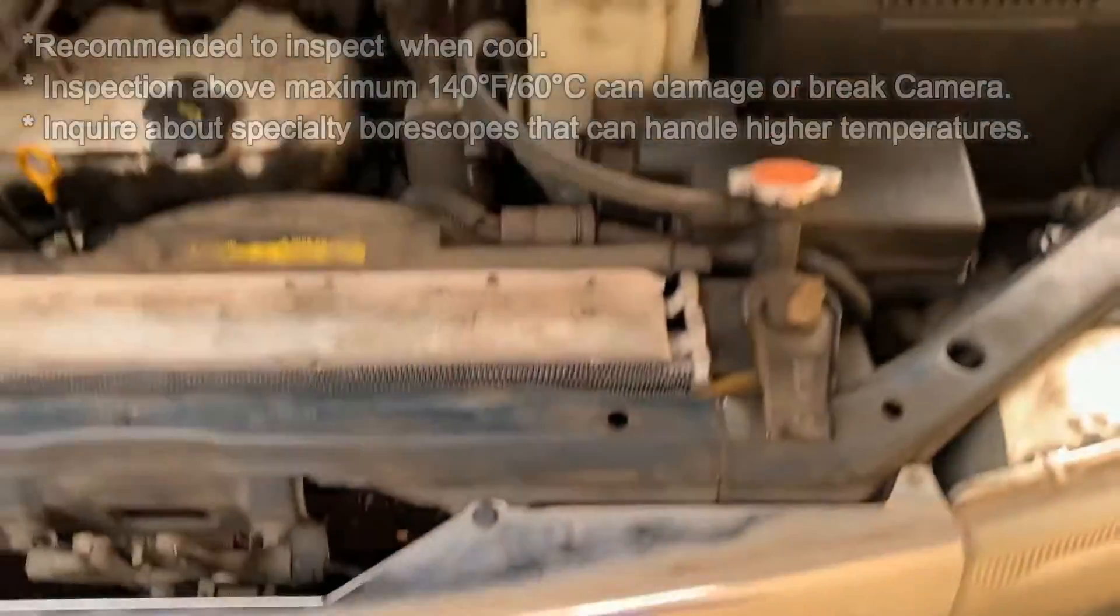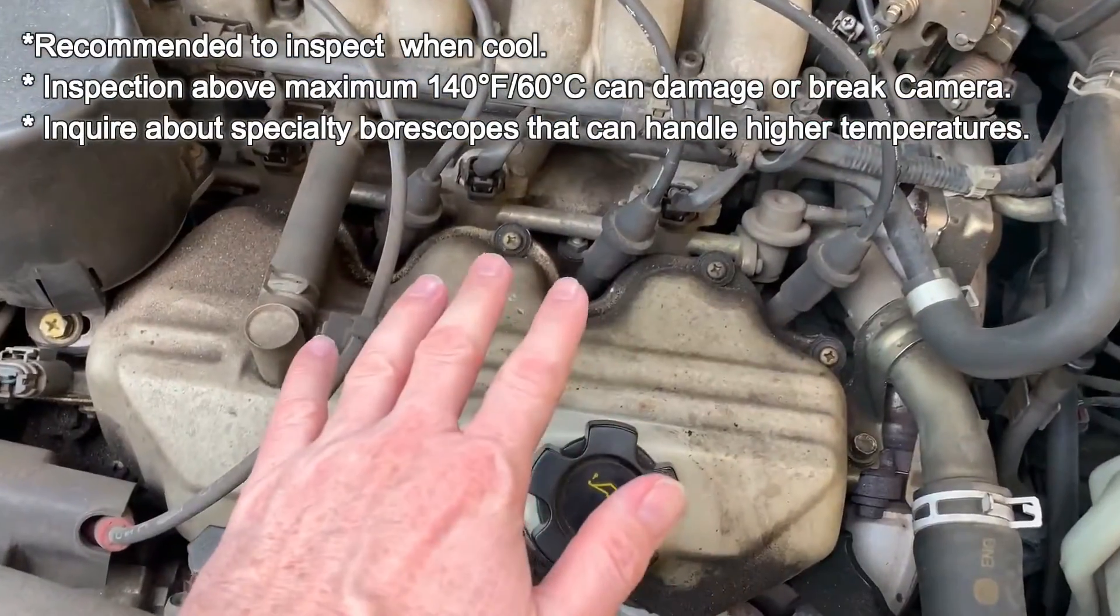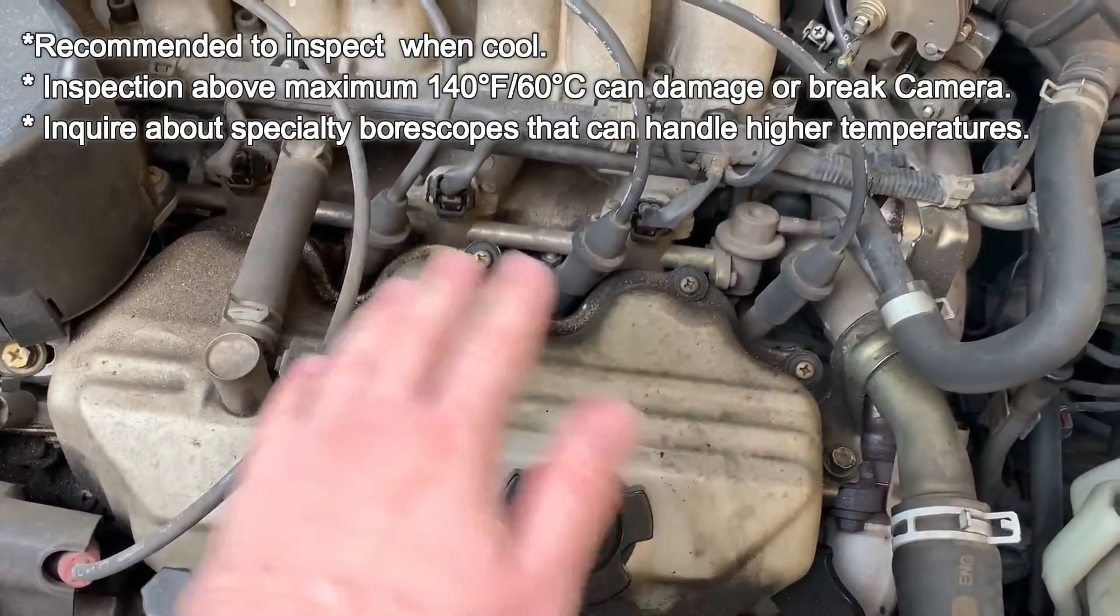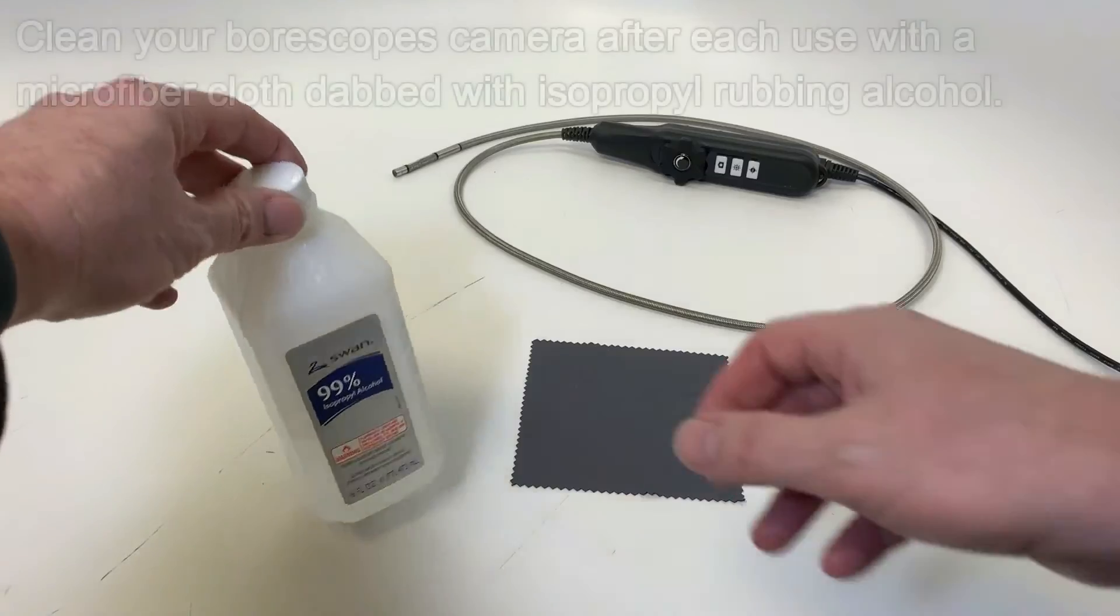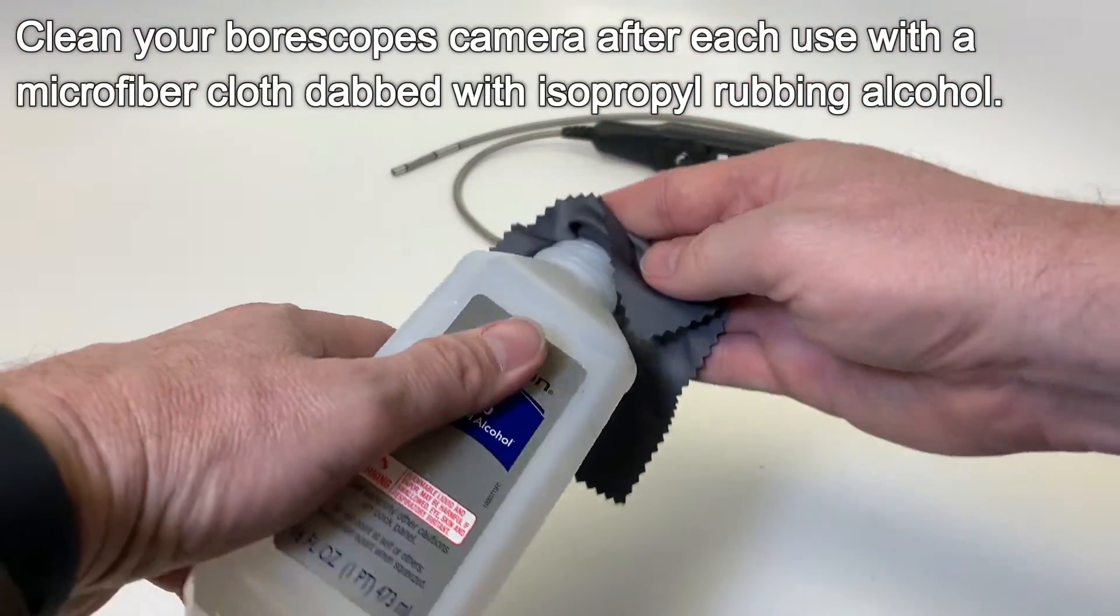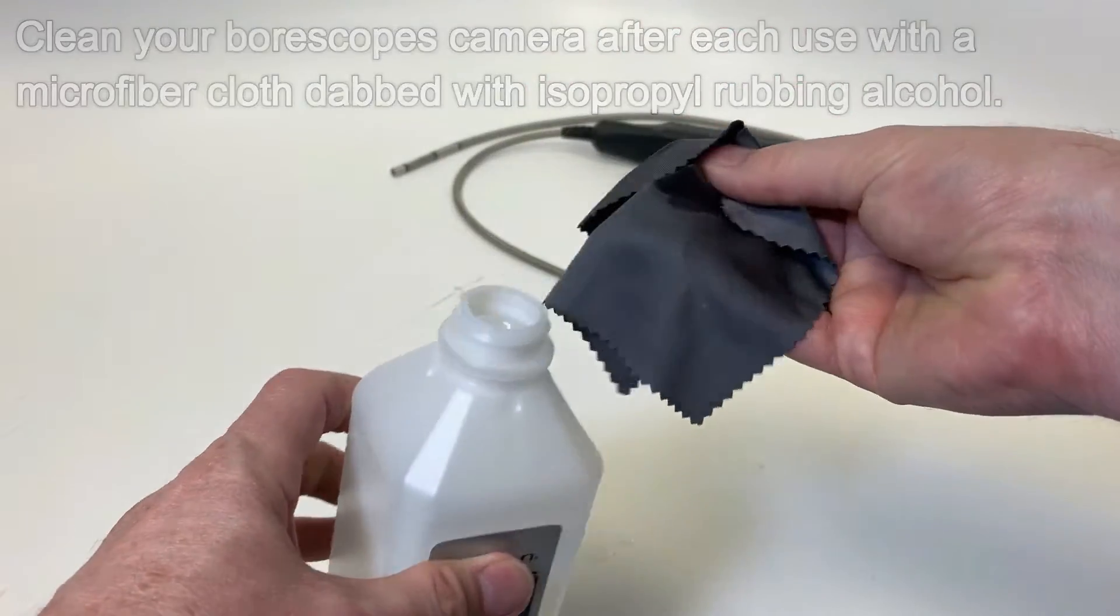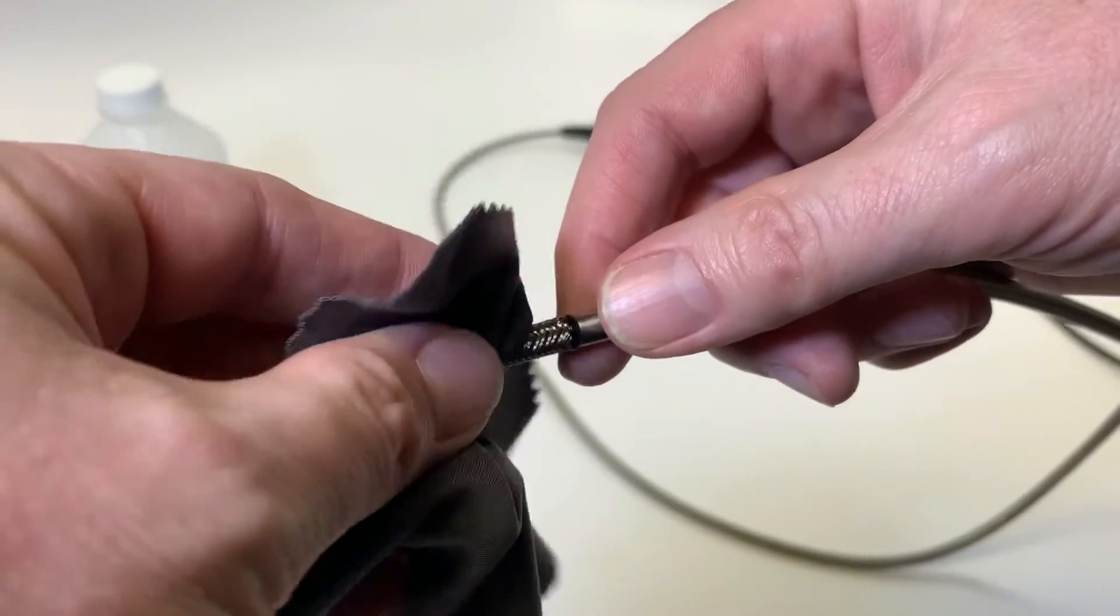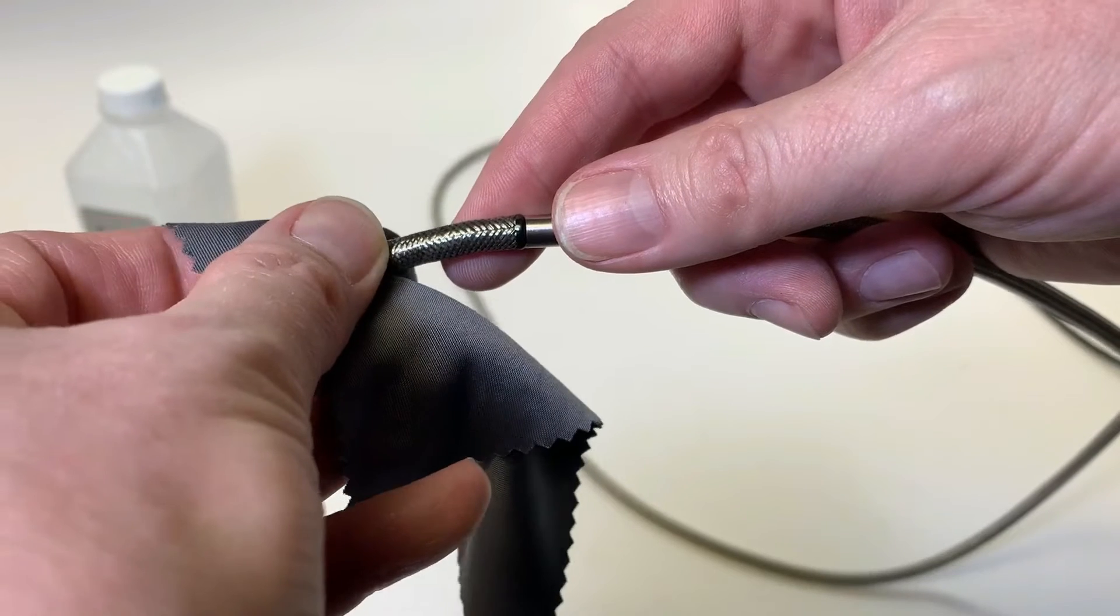Take care to make sure that the temperature of what you are inspecting is not too hot, which can damage the camera and components. Always clean your boroscope after use with a microfiber cloth dabbed in isopropyl alcohol to prevent dust, oil, and other debris from collecting on the camera.